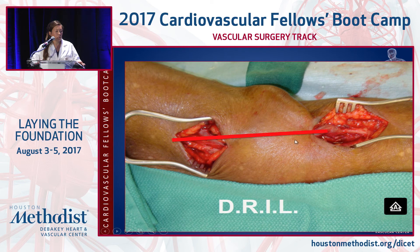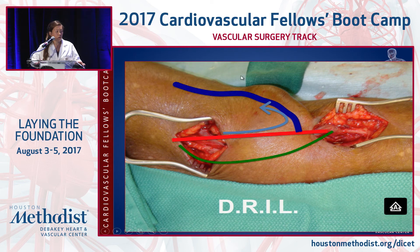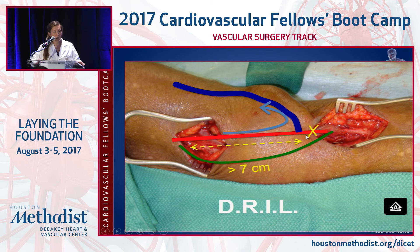Here's an example of a DRIL. Here's your fistula. You do the bypass — usually with saphenous vein, so you do have to put them to sleep — you bypass distally, and then you tie off the brachial artery.